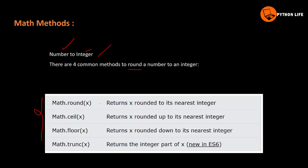Math.round(x) rounds x to its nearest integer. So if we have 4.6, we round up to its nearest integer, which is 5. The round number of x for 4.6 gives 5.